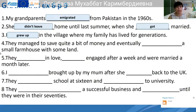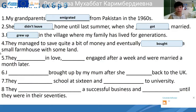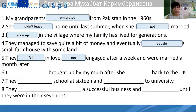'They managed to save quite a bit of money' — Nikita, perfect. 'And eventually a small farmhouse with some land' — bought. Other options? Bought. Very good, guys. 'They fell in love.' 'Then they got engaged after a few weeks and were married a month later.' Got engaged — Mubusarab, good. Vladimir: 'Got engaged after a few weeks and were married a month later.'